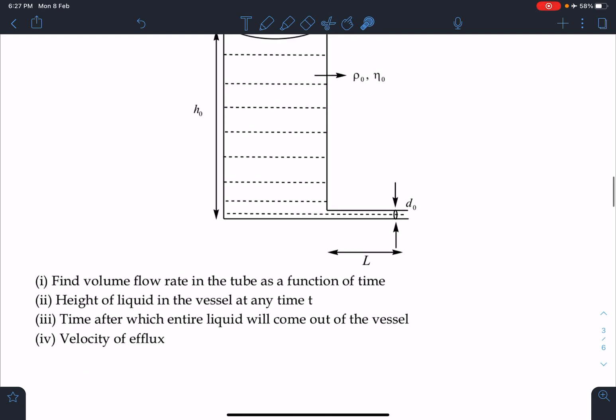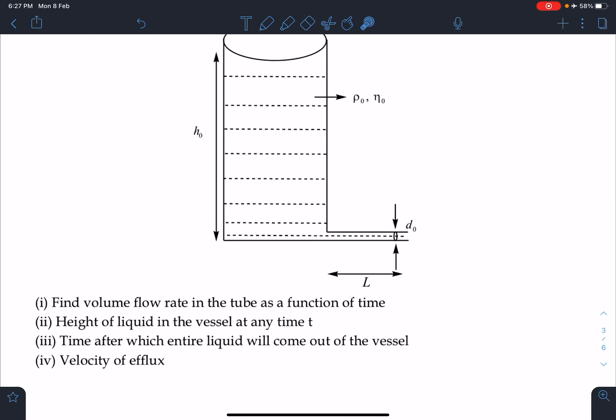Now these four problems we have to calculate. First one is volume flow rate in the tube as a function of time. Number two: height of liquid in the vessel at any time t. Number three: the time after which entire liquid will come out of the vessel. And number four: velocity of efflux. Few more points we can add here like the force acting on this vessel due to the liquid.